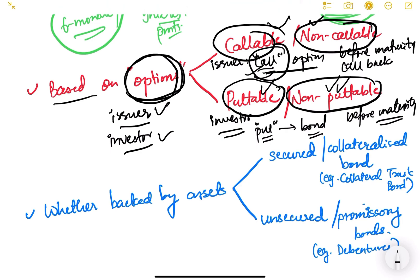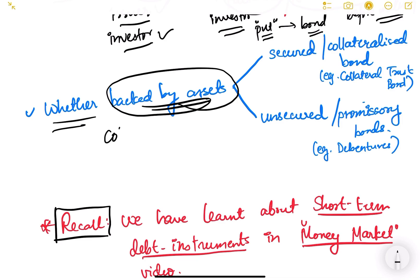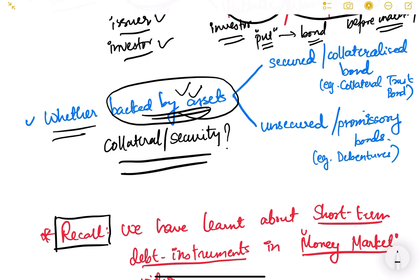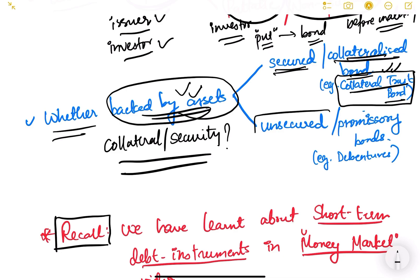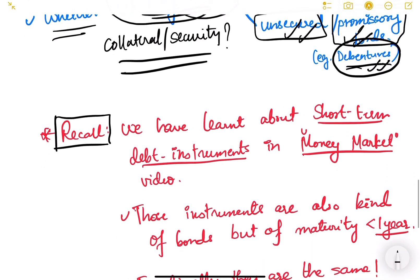The next classification is whether the bond is backed by assets or not — i.e., whether there is collateral or security. If backed by assets, it is a secured or collateralized bond — for example, collateral trust bonds. If not backed by any assets, it is known as an unsecured bond or promissory note — for example, debentures under the US definition are unsecured securities.